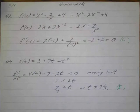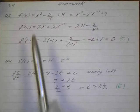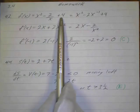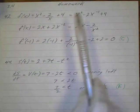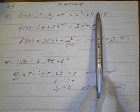On problem 42, find the instantaneous rate of change of this function: x squared minus 2 over x plus 4. So we just wrote this as a negative exponent: x squared minus 2x to the negative 1 plus 4.